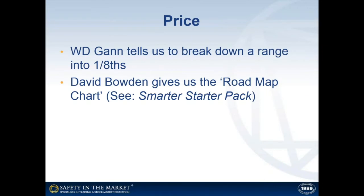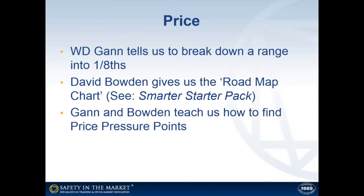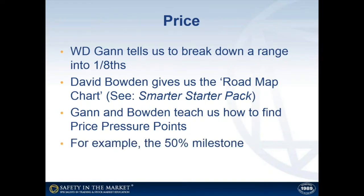David Bowden took that one step further in the Smarter Starter Pack and gave us the roadmap chart. On that chart, he highlighted not hundreds of points but four key points in a price range that we should watch when putting together a price forecast. This is where you should start when doing your price work. W.D. Gann and David Bowden teach us how to find individual price pressure points — for example, Gann talks about the importance of the 50% milestone, saying you can make a fortune just trading off the 50% rule alone. The trick when putting together a price forecast is to put all of your analysis onto the chart and observe key areas where you've got a number of milestones all lining up together, giving us what we call a price cluster. That's how you put a price forecast together.